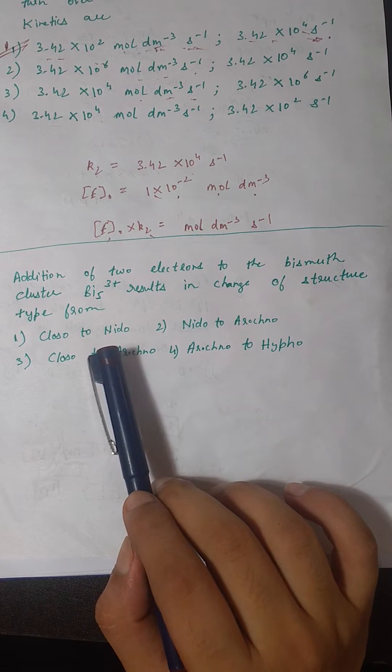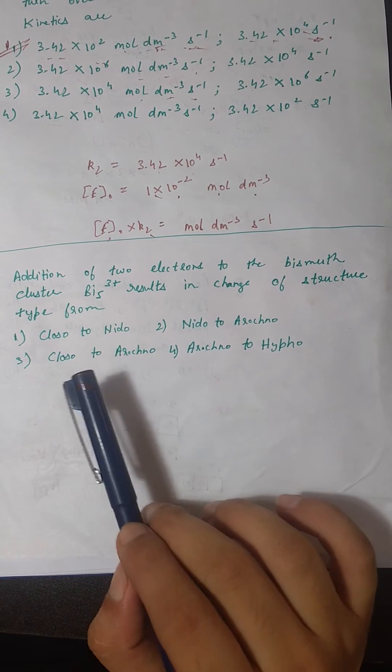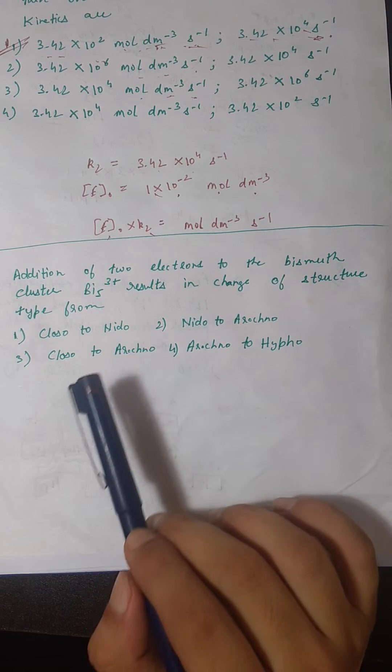Before we see what happens on addition of two electrons, we need to find out the basic structure for bismuth 5 3 plus.